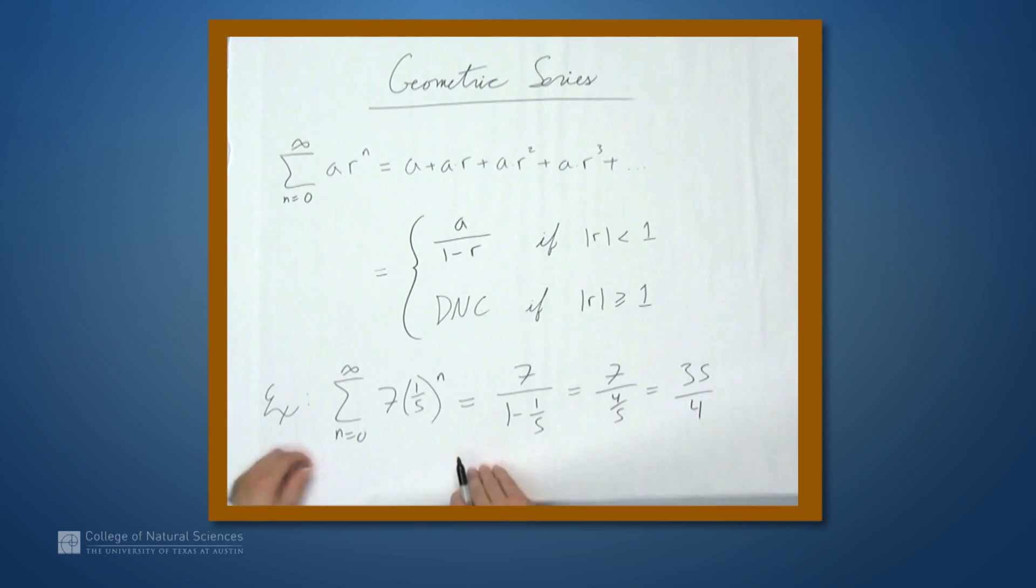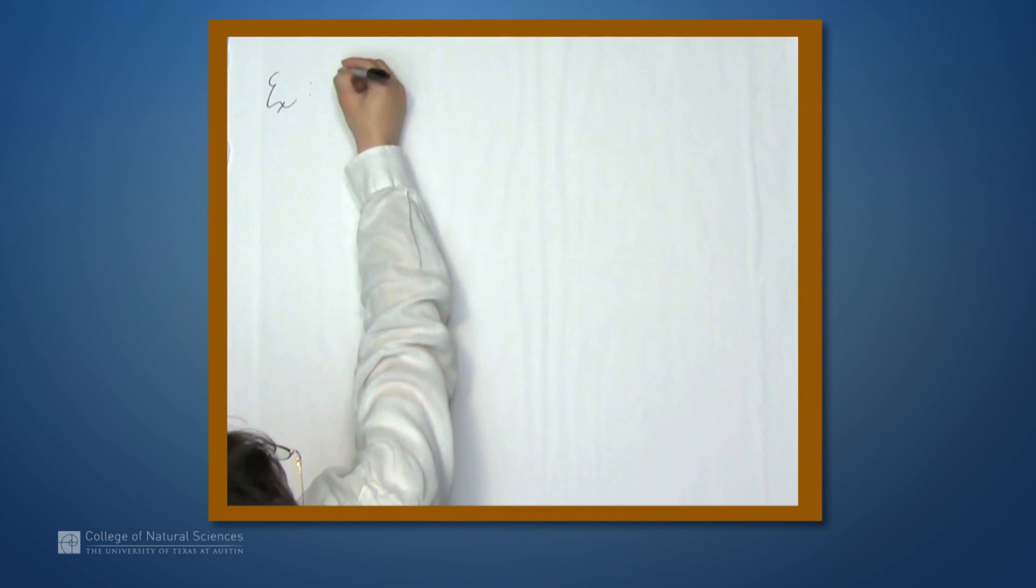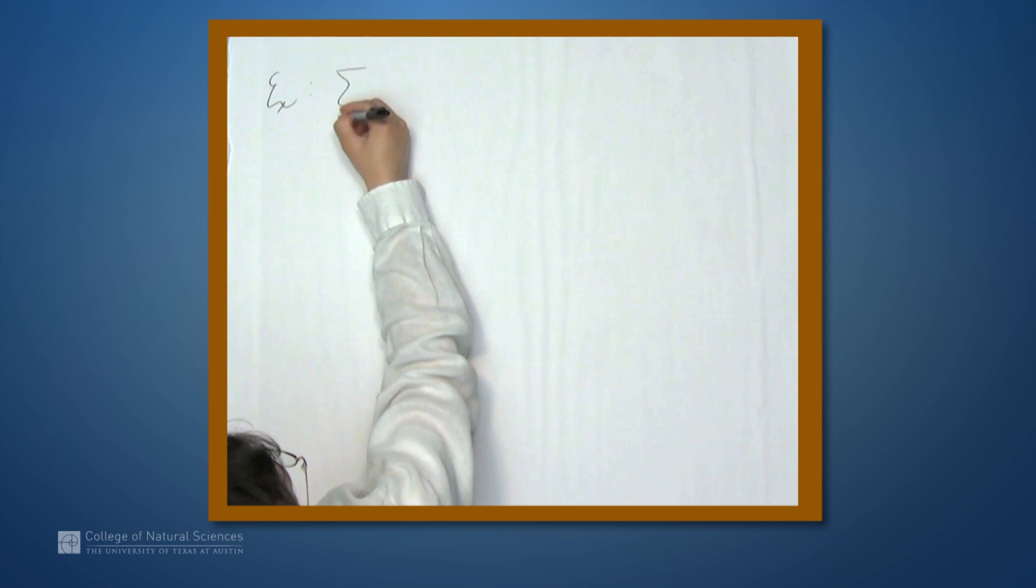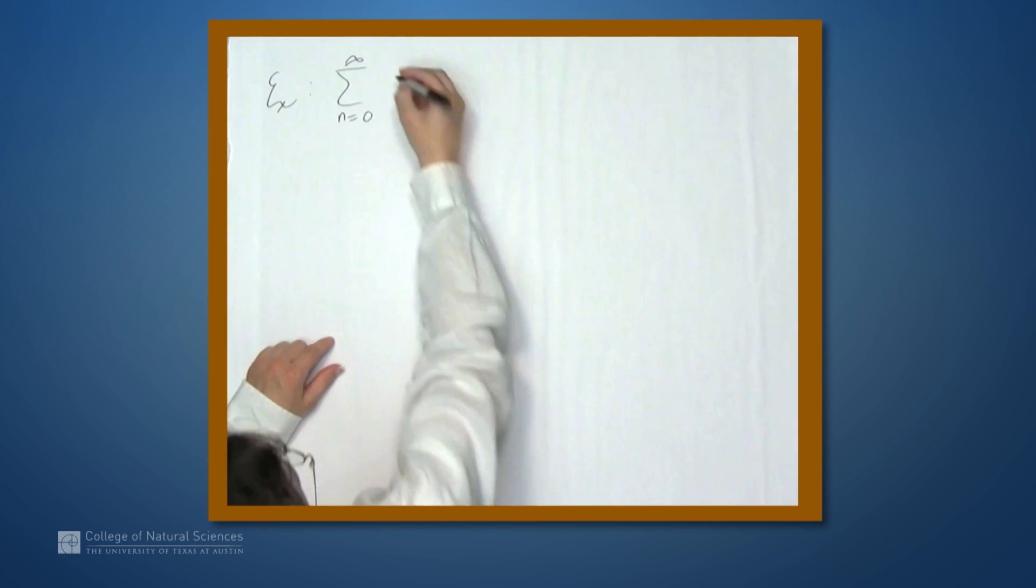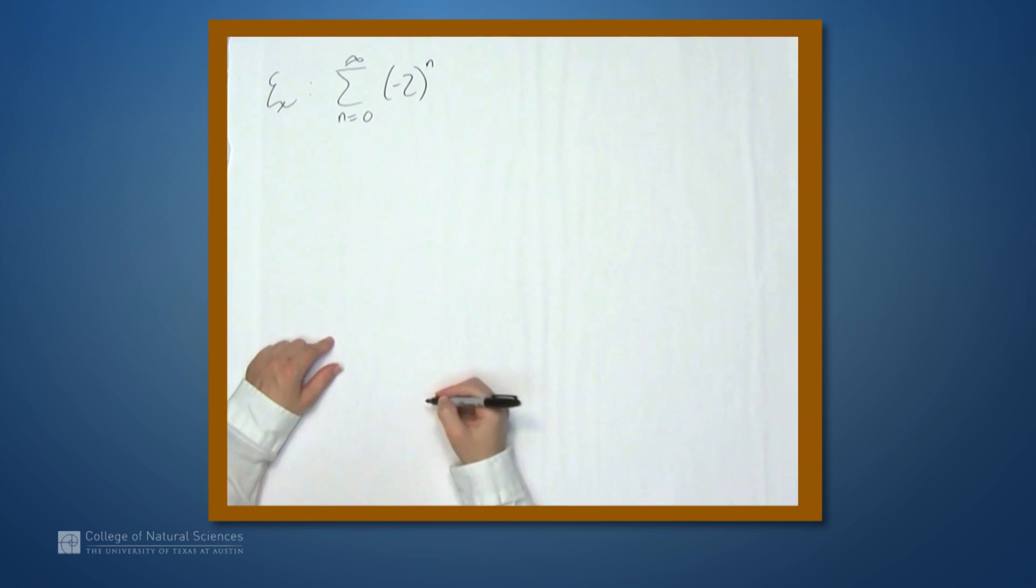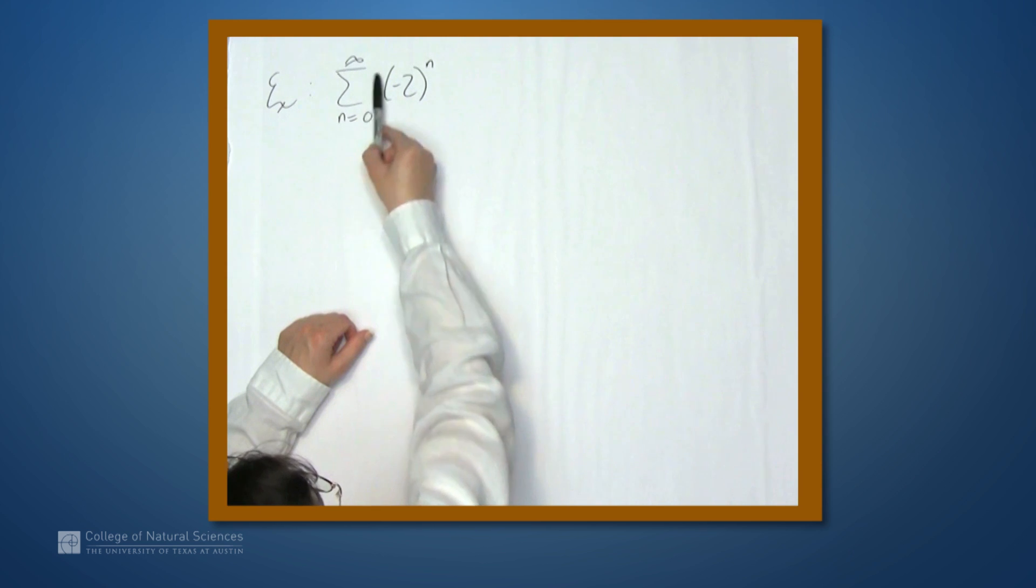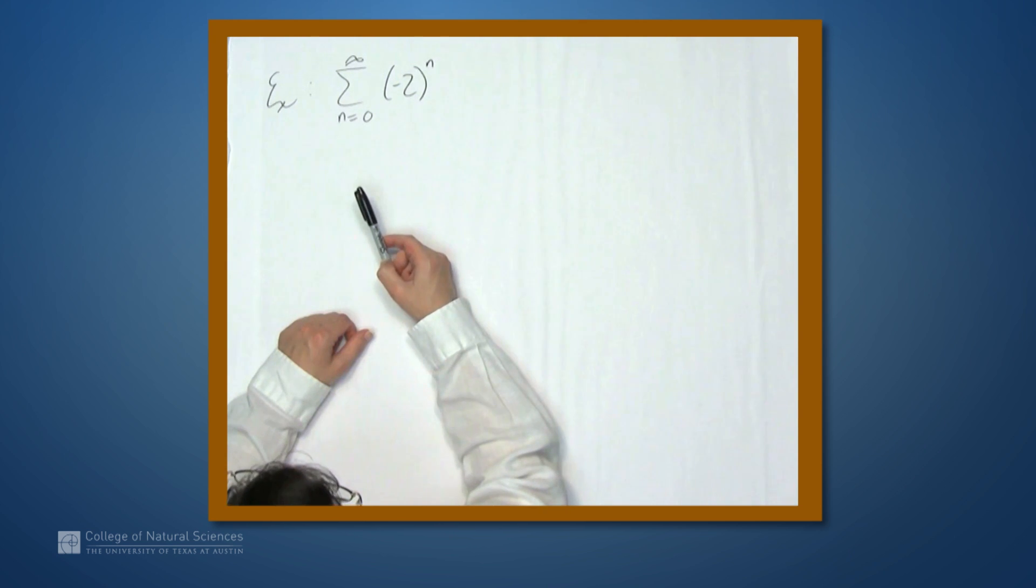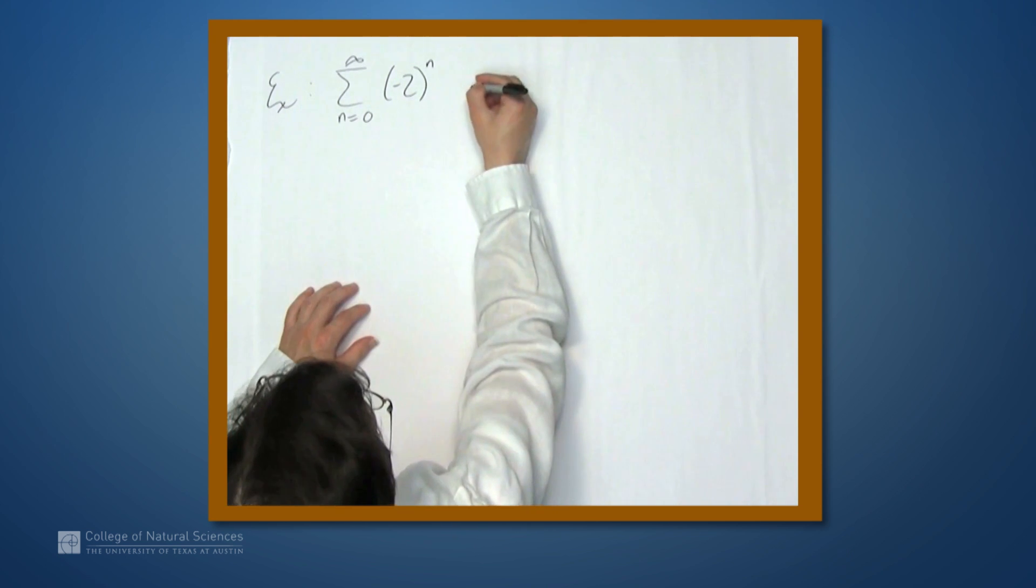Let's look at another example. Let's look at the sum from n equals 0 to infinity of negative 2 to the n. Now, in this case, a, well, there is nothing here, nothing written anyway, so a is simply 1, and r is negative 2. So this thing does not converge.